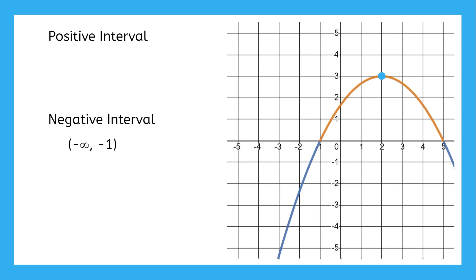So altogether, this positive interval started at negative one and ended at five. That maximum was just a turning point. We don't need to factor it into the positive or negative intervals at all.